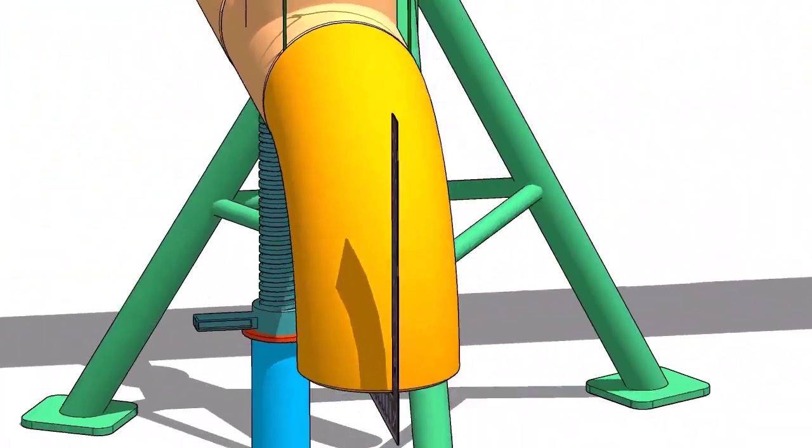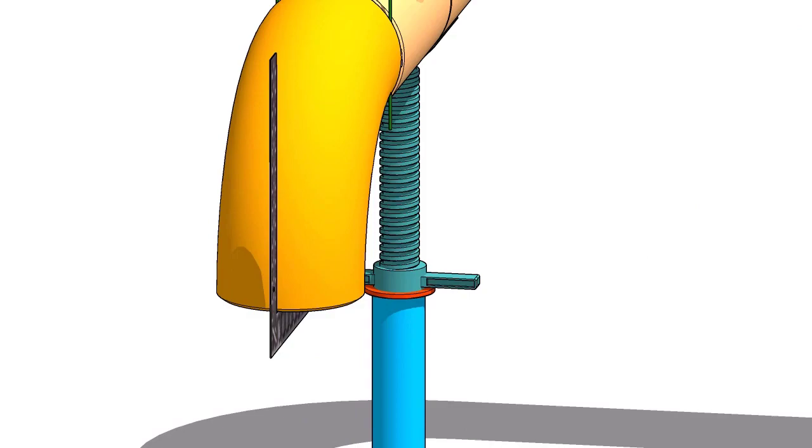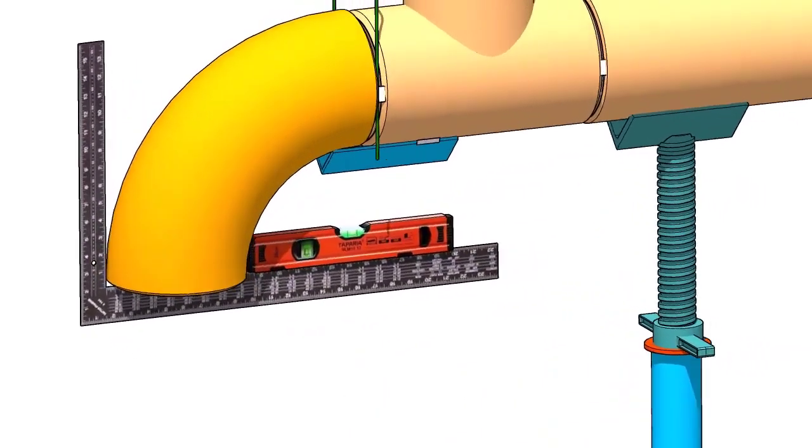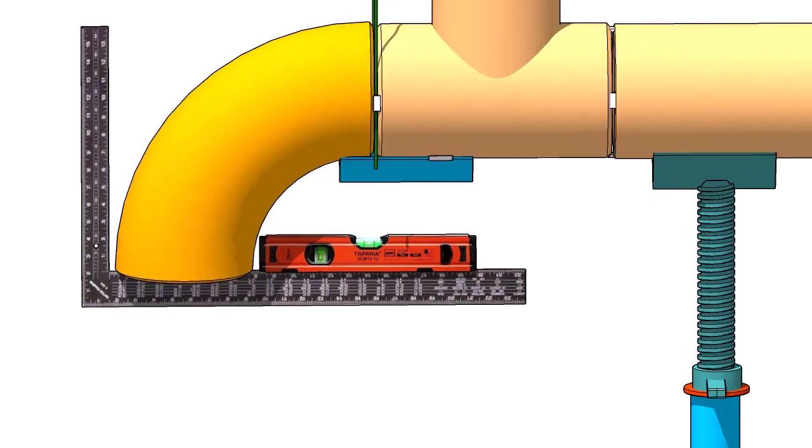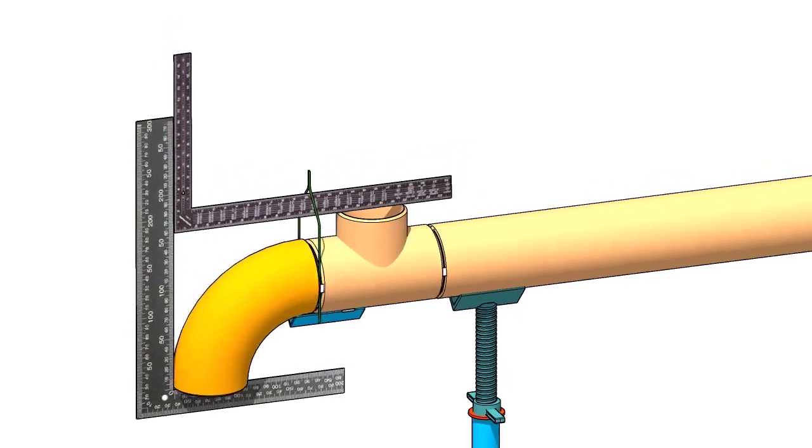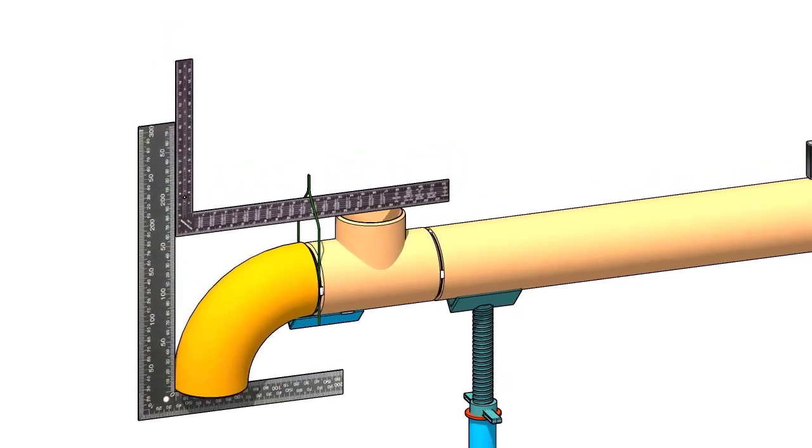Take the right angle and the spirit level longitudinal and maintain the elbow face level. Check the branch face and the elbow face are right angle to each other.